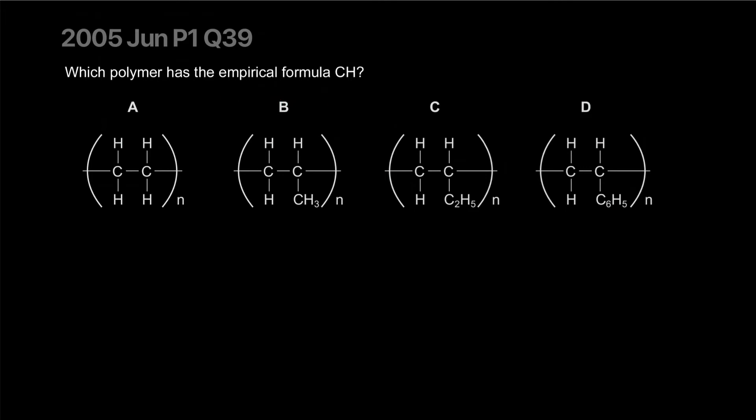Which polymer has an empirical formula of CH2? Taking a look at A, it clearly is C2H4, which can be simplified to CH2. Over here, you have three carbons and six hydrogens, which can be simplified to CH2. Again, over here, it's four carbons and five, six, seven, eight hydrogens. That's still that. That's eight carbons and five, six, seven, eight. Equal. So that's CH. Answer.